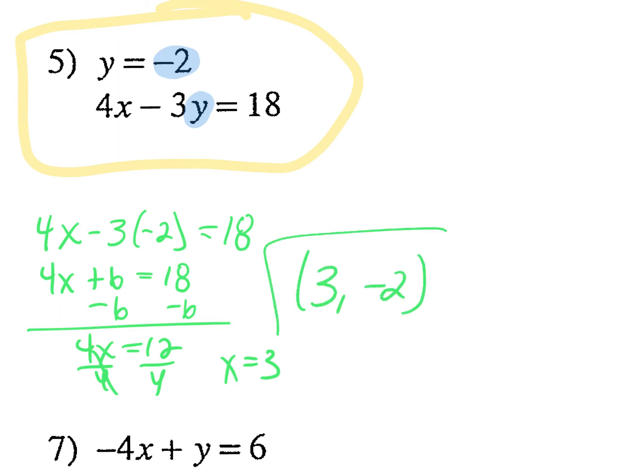Mentally, real quick: 4 times 3 is 12, minus 3 times negative 2 which would be negative 6, so 12 plus 6 is 18. Good to go.